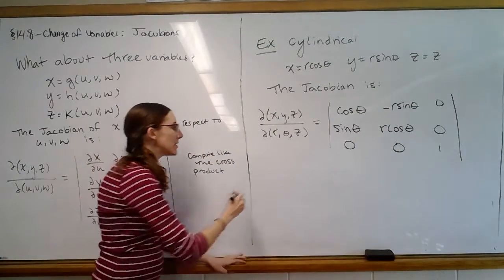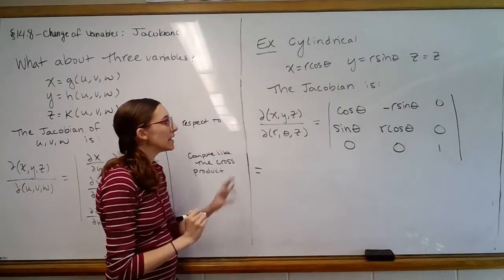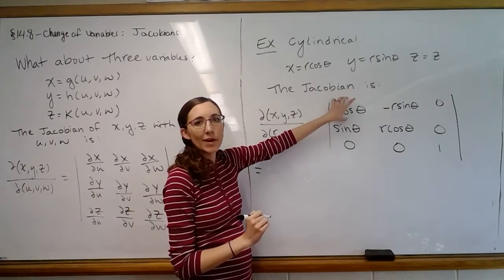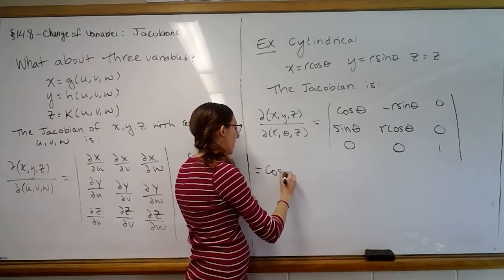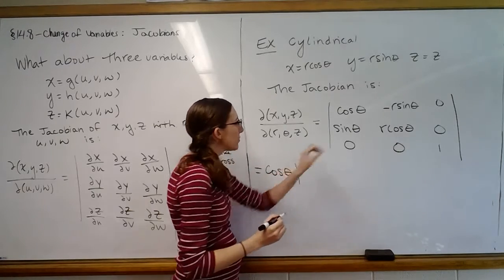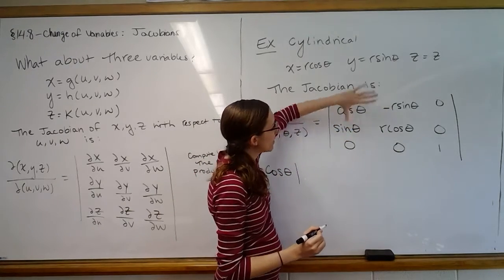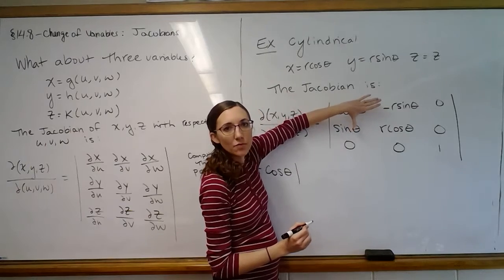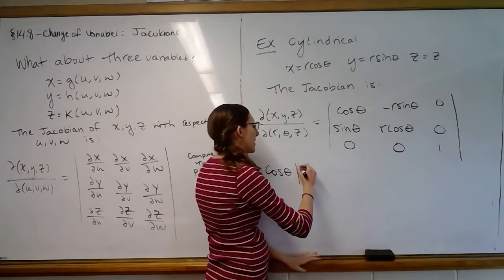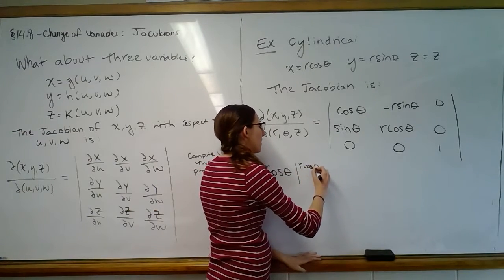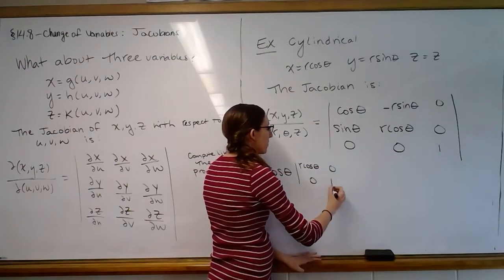So then when we take a look at this, if you remember what we did, we'll take each piece one at a time. So we'll take the cosine theta, and then we're going to multiply it by the little determinant where we cross off cosine theta's row and column. So then we'll have the little determinant of r cosine theta, zero, zero, one.